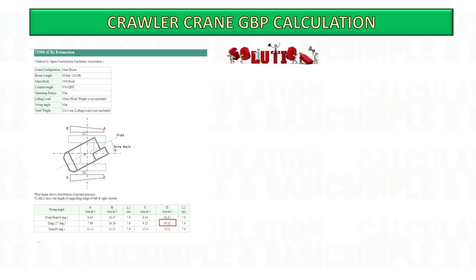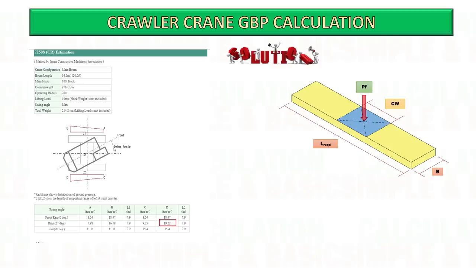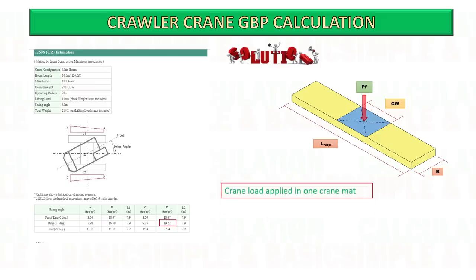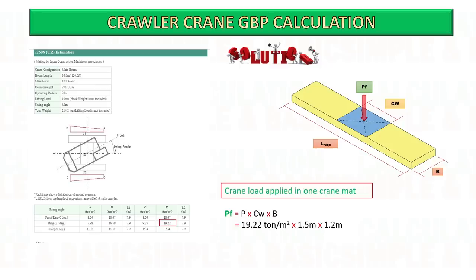Always we need to consider in the calculation the maximum pressure on one crane mat. The contact area of the crawler track on a single crane mat can be determined by multiplying the width of the crawler track by the width of the mat. This calculation yields the point load exerted on the mats.